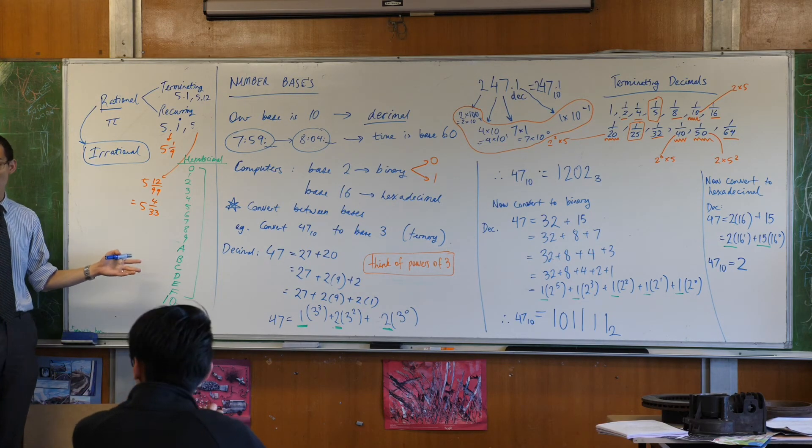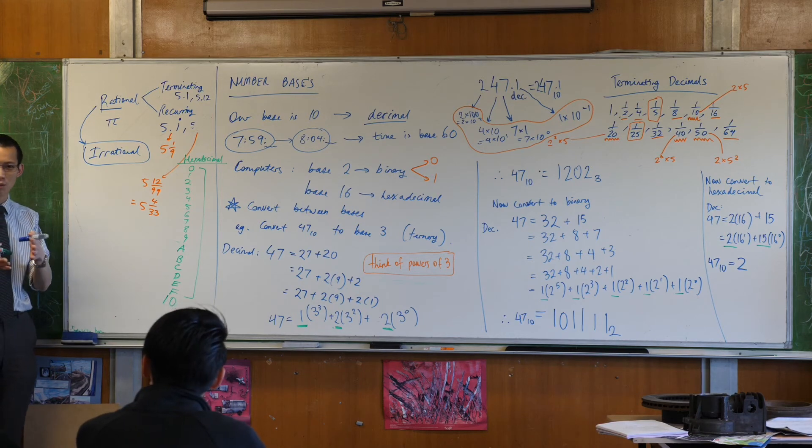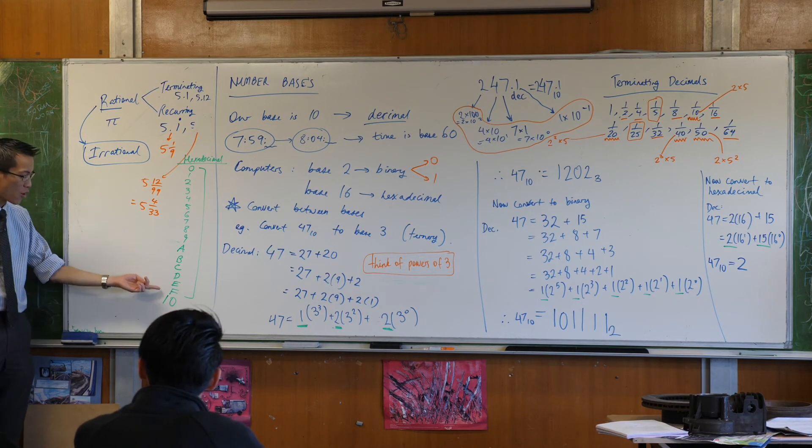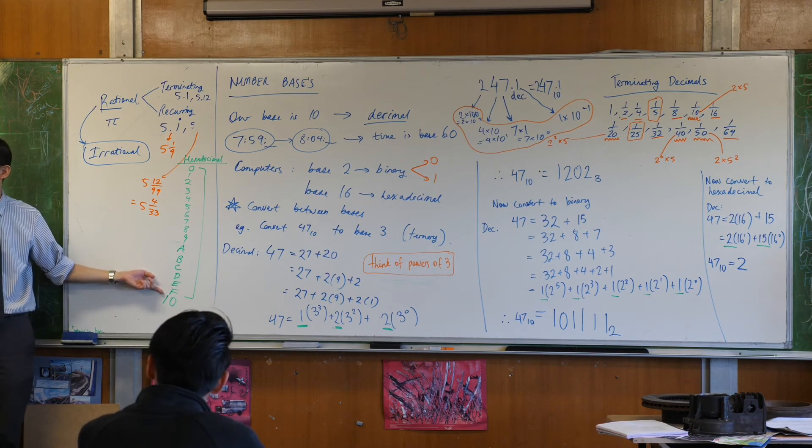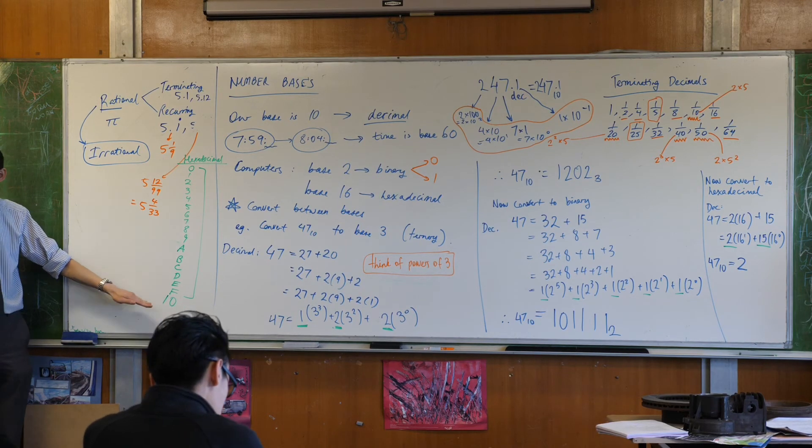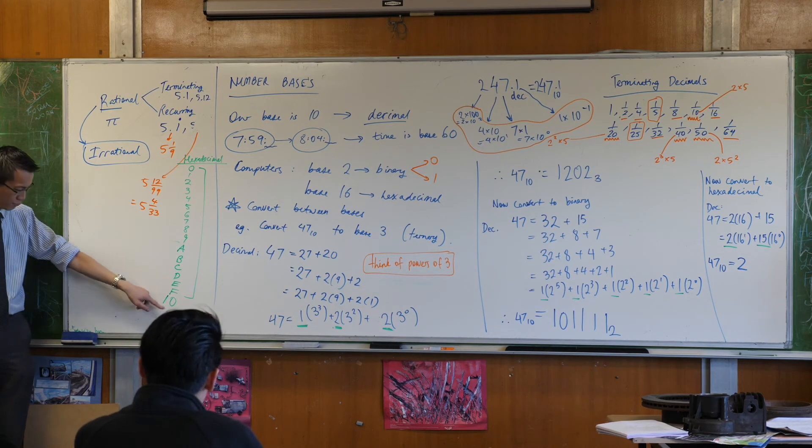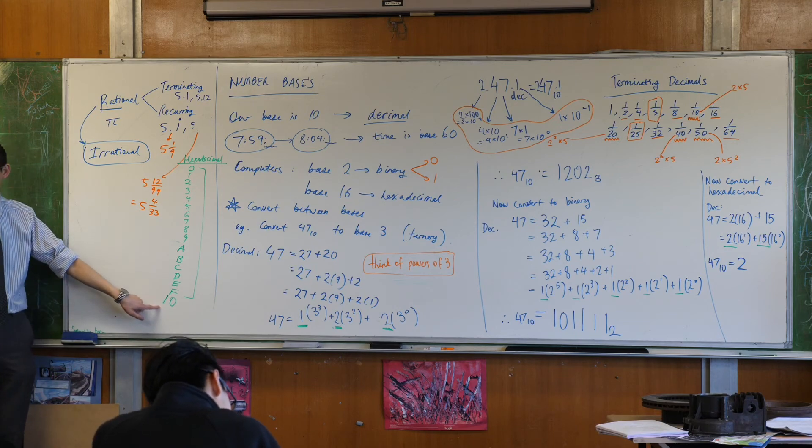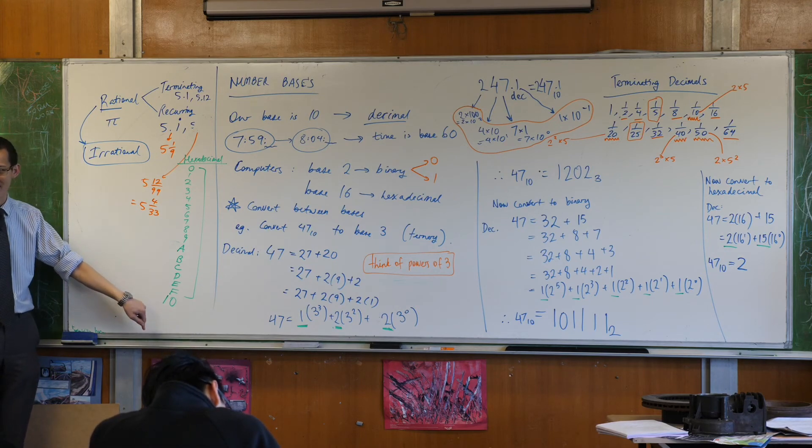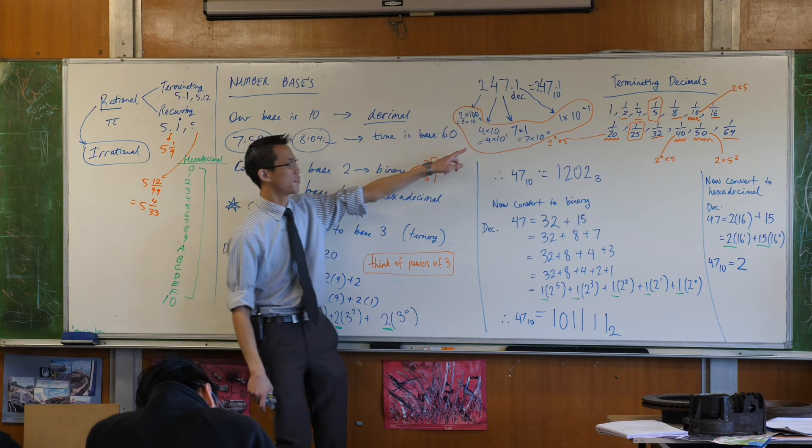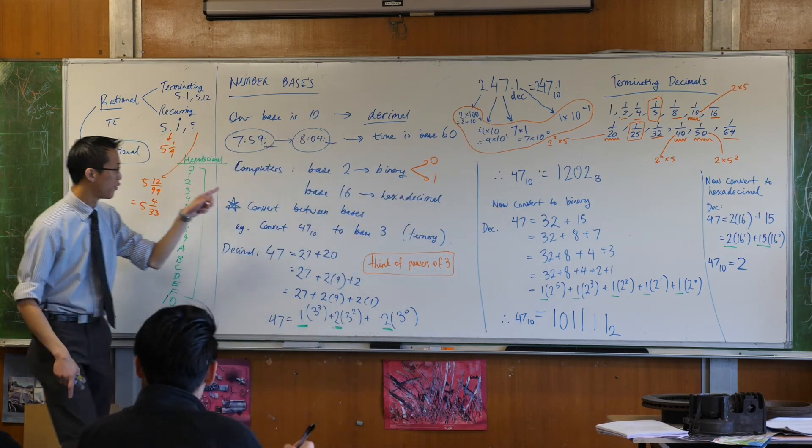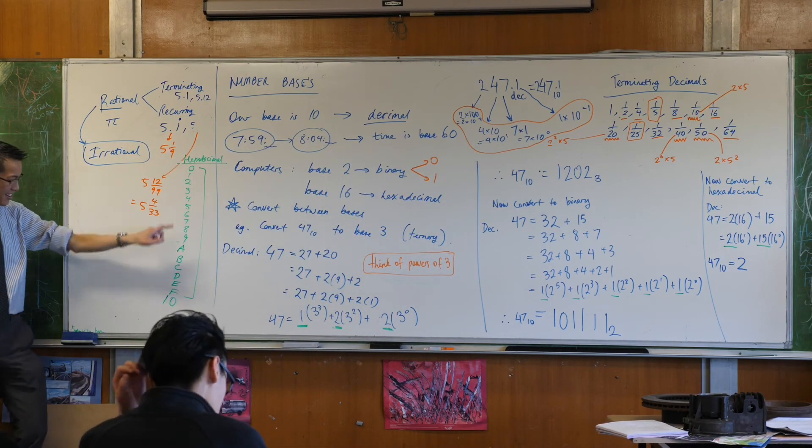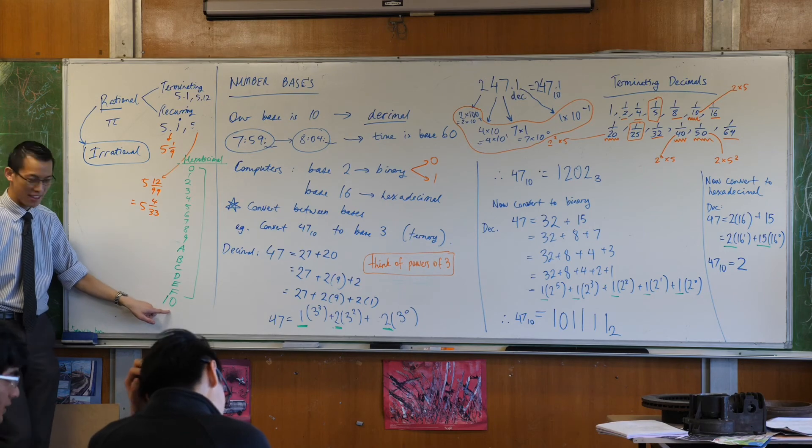There are 10 digits in base 10. But once you get to that last number, you're like, oh no, I've run out of digits. I've run out of symbols. So therefore, once you get to the next level, you add a new place value. So that 1 isn't 1 lot of 10. It's not 1 lot of 10. It's 1 lot of 16. So there's a 16, and then there are no units.